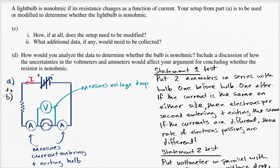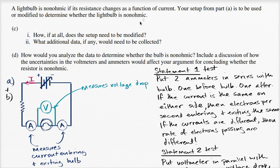Let's now tackle the rest of this problem. A light bulb is non-ohmic if its resistance changes as a function of current. The setup from part A, which we have right over here, is to be used or modified to determine whether the light bulb is non-ohmic. How, if at all, does the setup need to be modified?